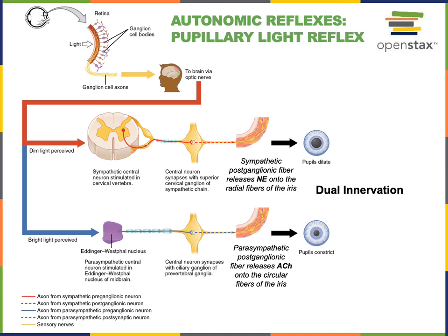This idea — that a single organ, the iris in the eye, is regulated by both the sympathetic and parasympathetic divisions of the autonomic nervous system — is known as dual innervation. The sympathetic nervous system causes dilation of the pupils, whereas the parasympathetic nervous system causes constriction. The postganglionic parasympathetic fibers release acetylcholine to stimulate the pupillary constrictor muscles, whereas the postganglionic sympathetic fibers release norepinephrine to stimulate the pupillary dilator smooth muscles.